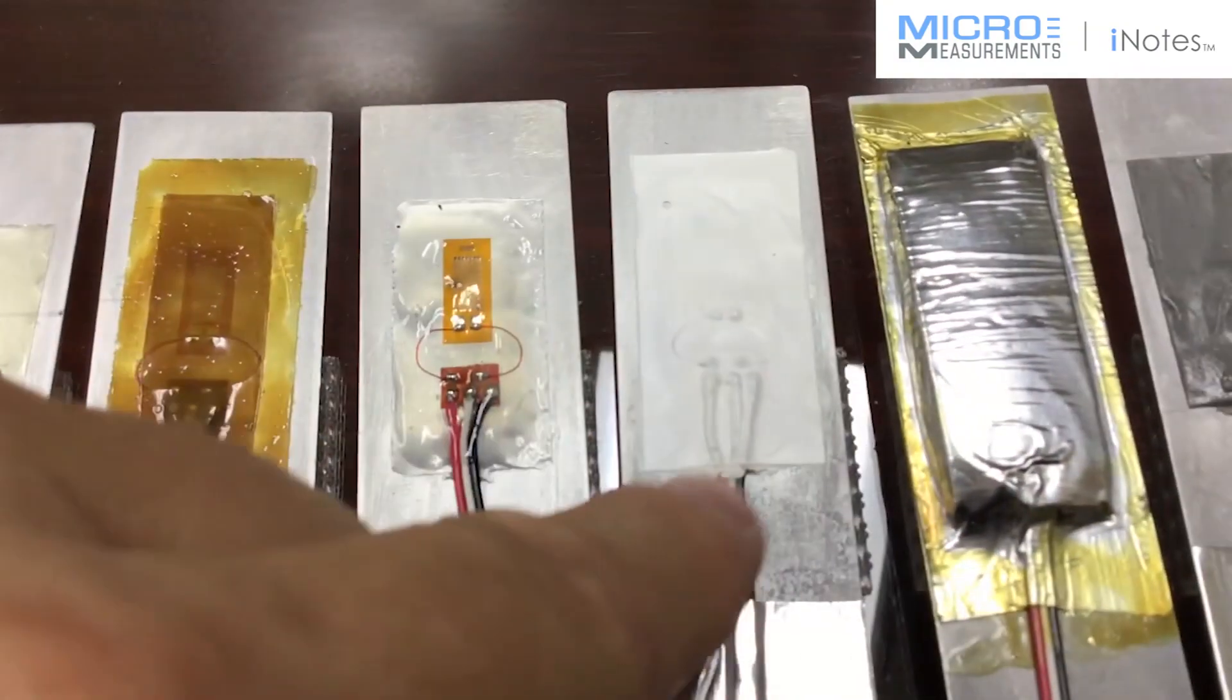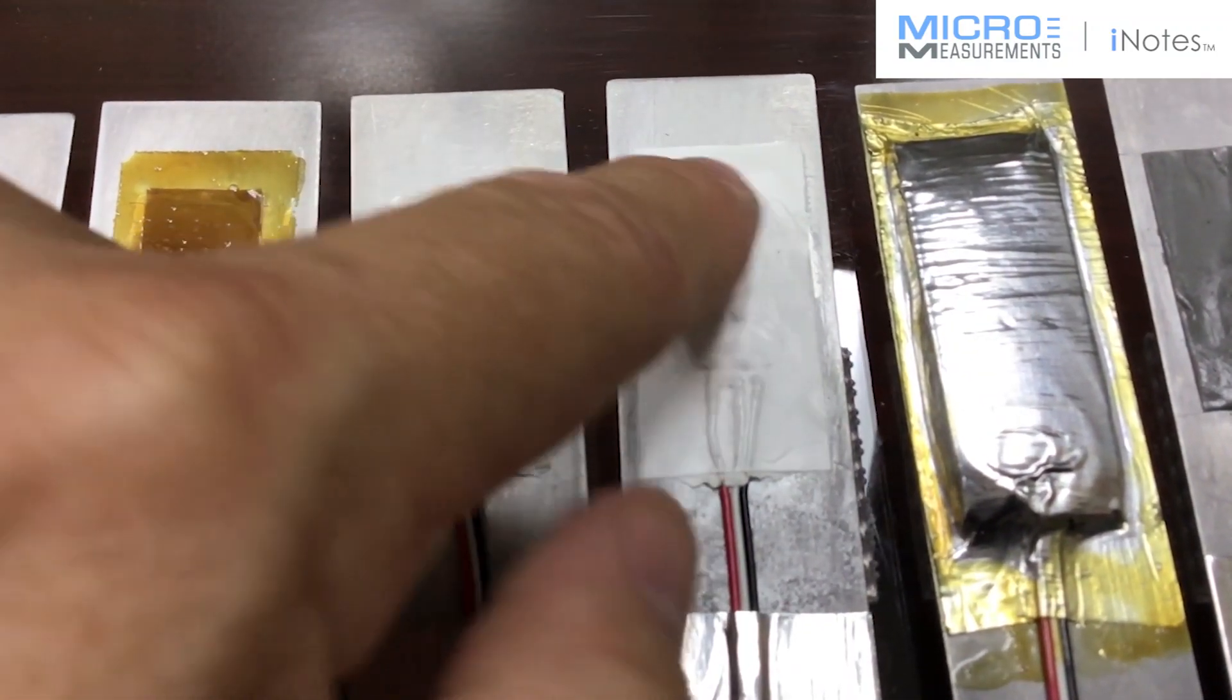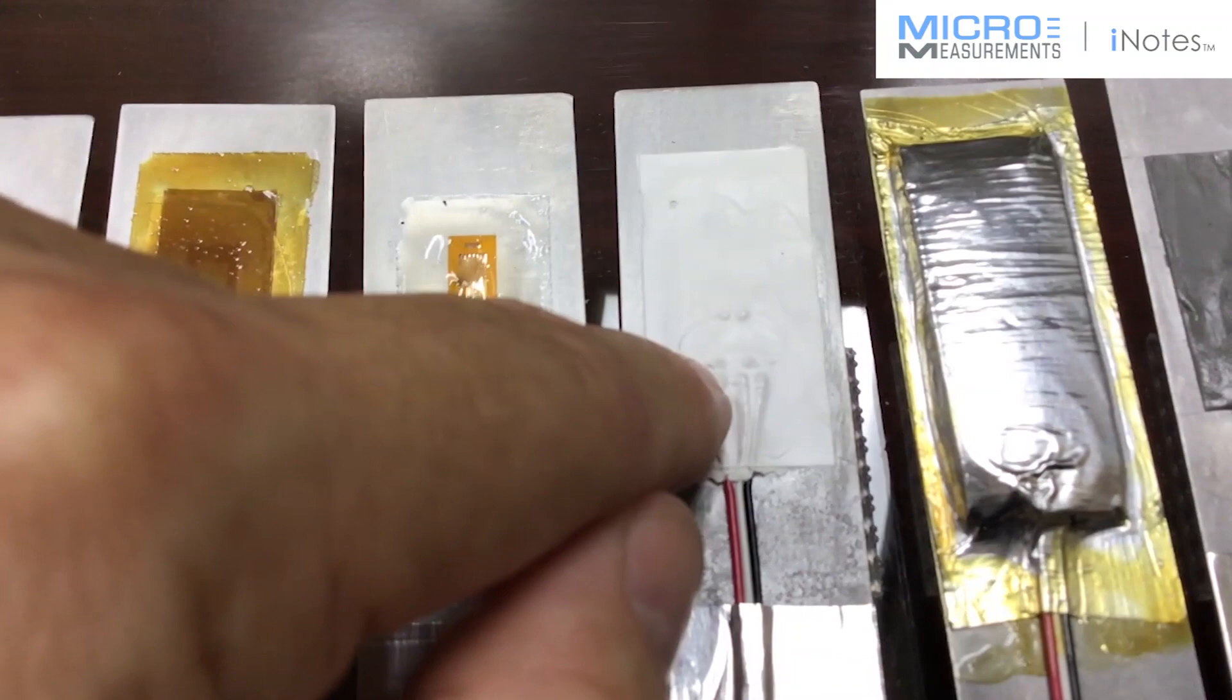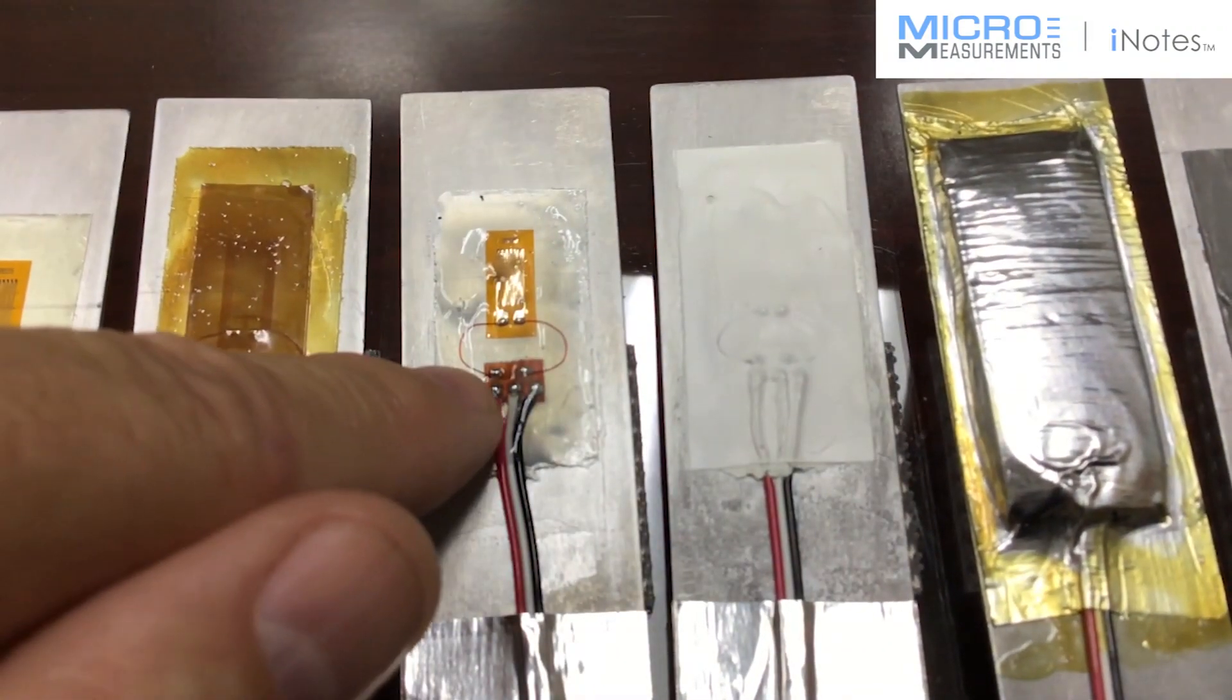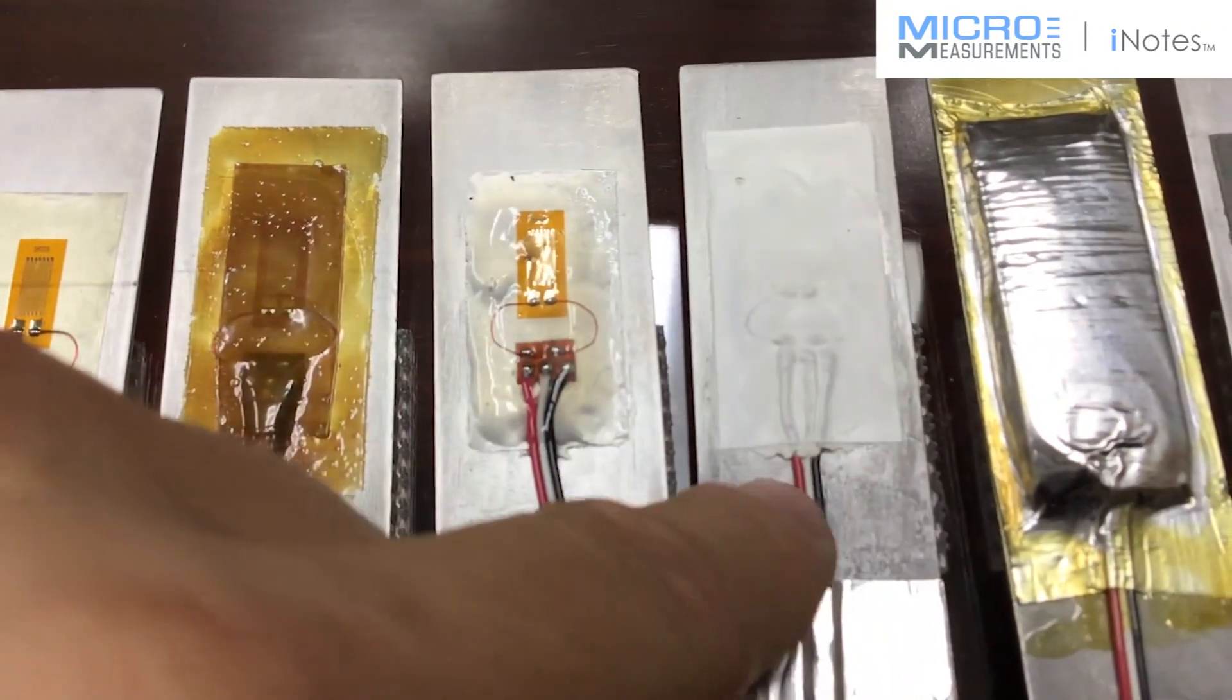And then the next one I mentioned just a minute ago. This is the M-Coat D. It's an acrylic. Oftentimes we put this on and then we put something else over top of it. It could be a layer of C or very commonly we put a layer of M-Coat B over the top of it.